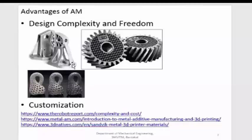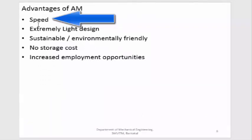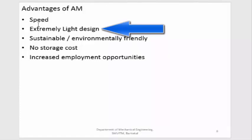The next advantage is speed, mainly related to very complex parts. For simple components like a shaft, a CNC machine performs better. But for very complex parts, additive manufacturing can work at a much faster rate because CNC requires a lot of setup time. Another advantage is extremely light design — since very complex curves and profiles are achievable, analysis software can be used to optimize material and ensure lightweight components. Those optimized shapes may not be producible by conventional machines but are easy to produce with additive manufacturing, saving material and reducing cost.